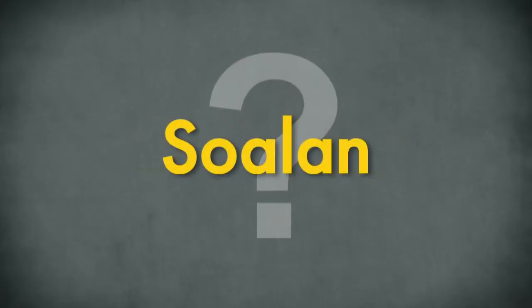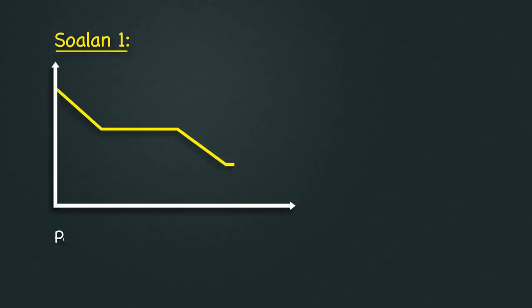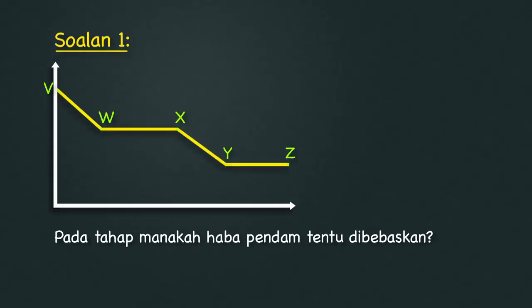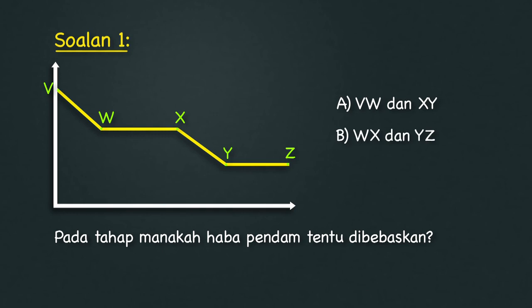Mari kita lihat contoh soalan bagi kertas satu. Soalan satu: Pada tahap manakah haba pendam tentu dibebaskan? A) VW dan XY, B) WX dan YZ, C) VW dan YZ, D) WX dan XY. Jawapan: B.